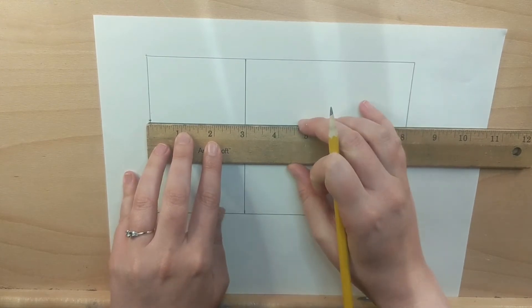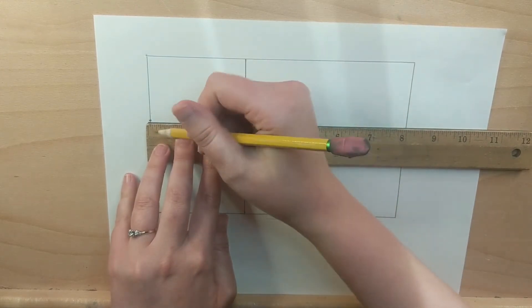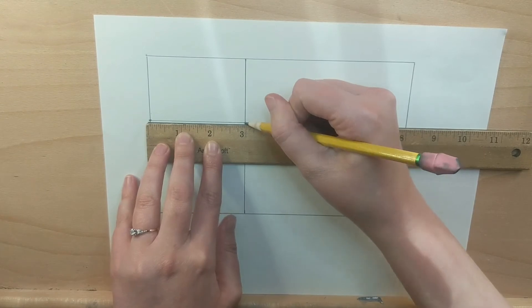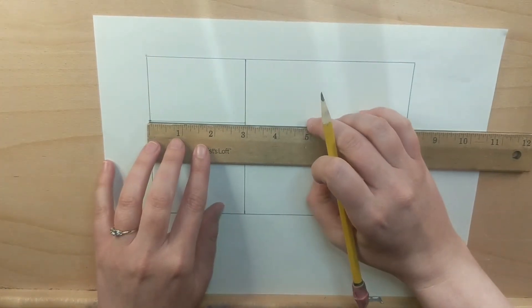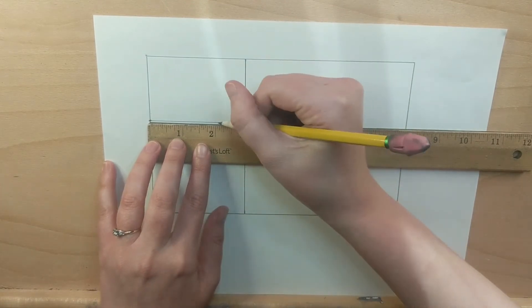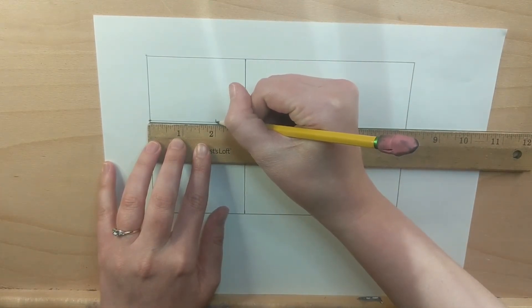Now above that square there's an even smaller rectangle. Inside that rectangle, I'm going to draw a 2 inch square, so I'm going to go 2 inches in from the side and then draw a line going up.